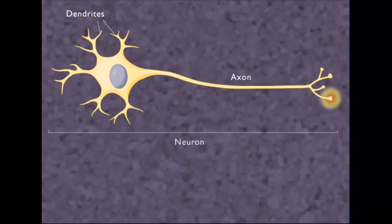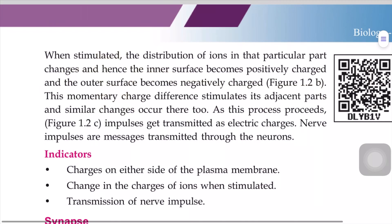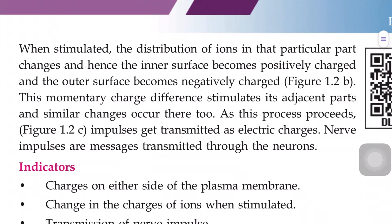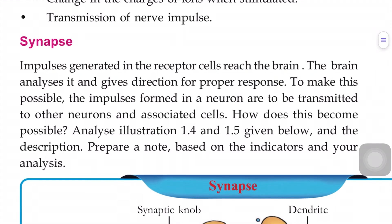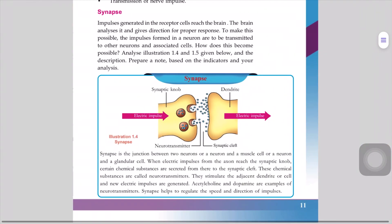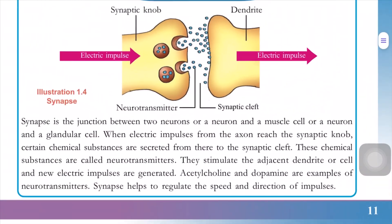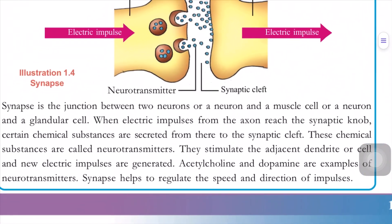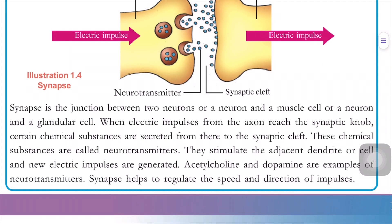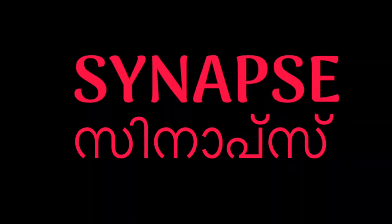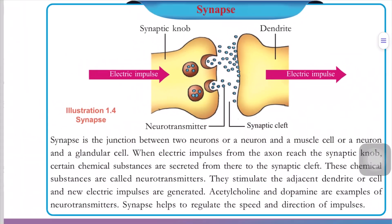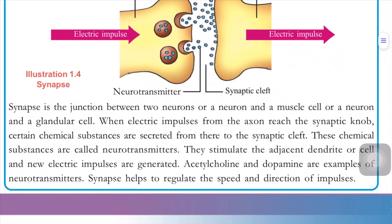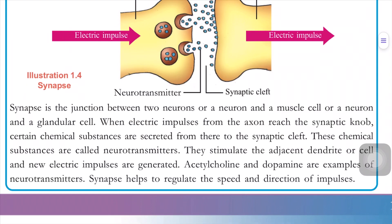The impulses are messages transmitted through the neuron. Neurons transmit these impulses through synapses. Synapse is the junction between two neurons, or a neuron and a muscle cell, or a neuron and a glandular cell.